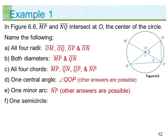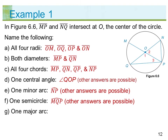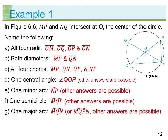F) One semicircle: arc MQP — other answers are possible. G) One major arc: arc MQN, or arc MQPN — other answers are possible.